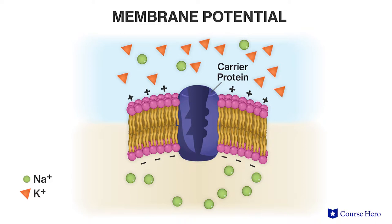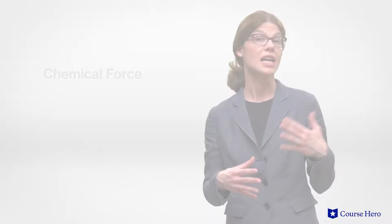Thus, there are two main forces that drive diffusion of ions across the membrane: a chemical force which results from the ion's concentration gradient, and an electrical force which results from the voltage across the membrane. The combination of these forces acting on an ion is called the electrochemical gradient. This gradient determines the direction in which an ion moves across the membrane.